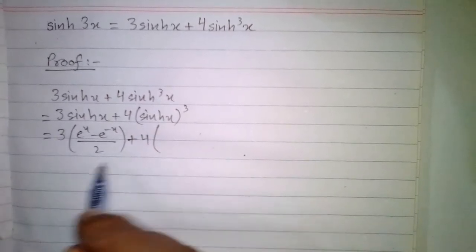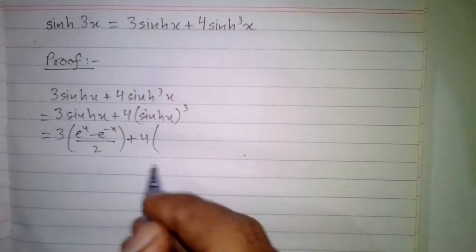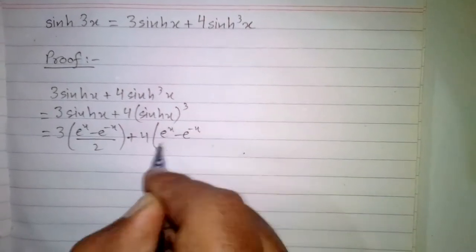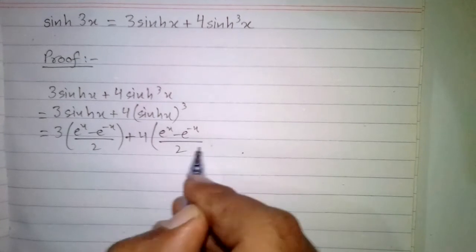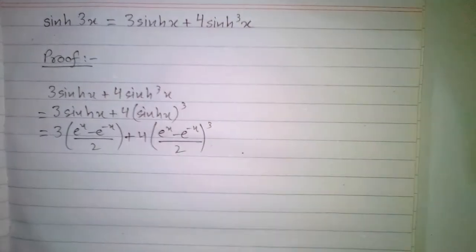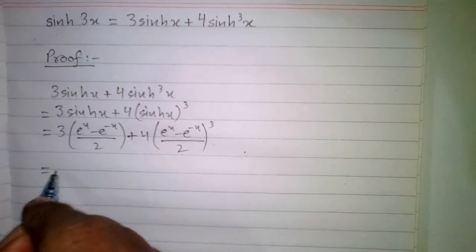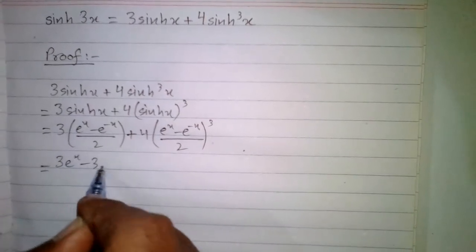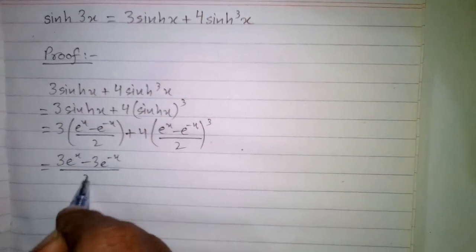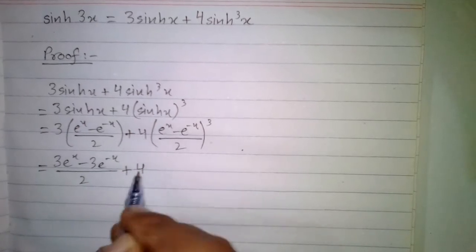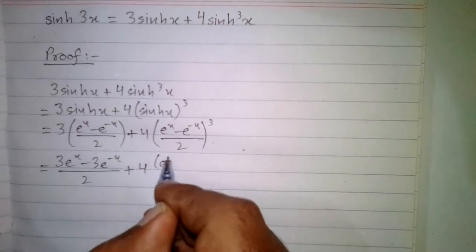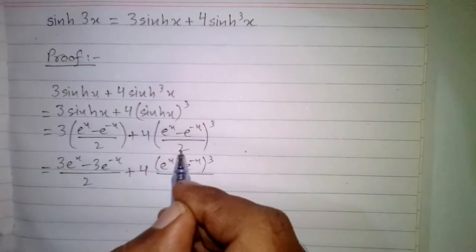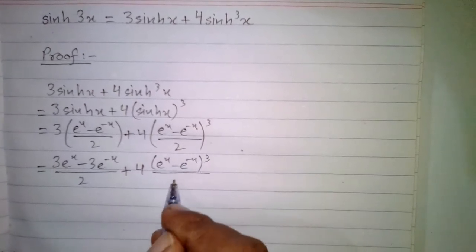Substituting, we have 3 times (e to the power x minus e to the power minus x) upon 2, plus 4 times (e to the power x minus e to the power minus x) upon 2, whole to the power 3. This can be written as 3 times e to the power x minus 3 times e to the power minus x, upon 2, plus 4 times (e to the power x minus e to the power minus x) cubed upon 8, since 2 cubed is 8.